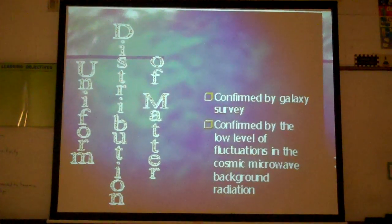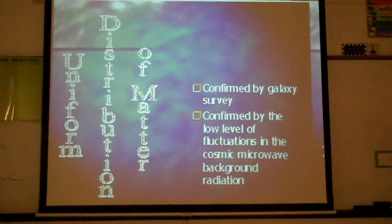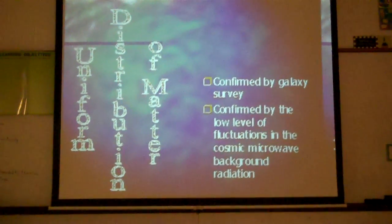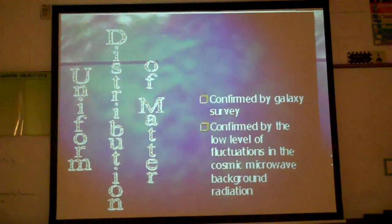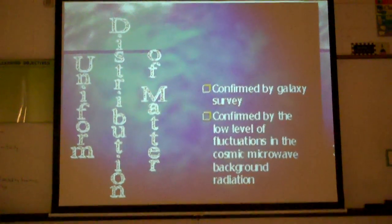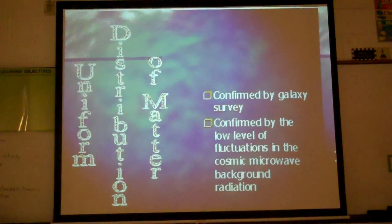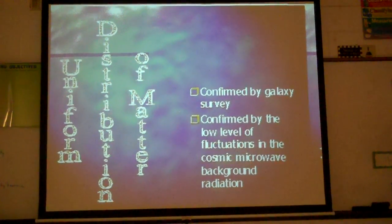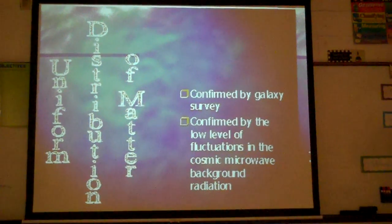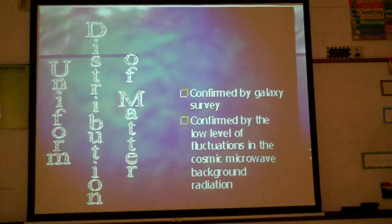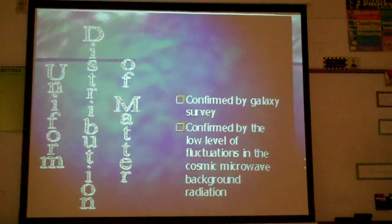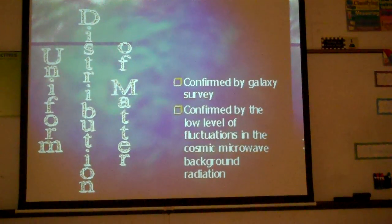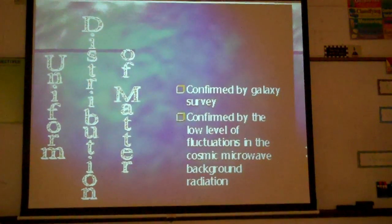The uniform distribution of matter means that all of the matter in the universe is the same throughout — it has been distributed evenly throughout the universe. It is confirmed by the galaxy survey and also by low levels of fluctuations in the cosmic microwave background radiation. Another word for fluctuations is changes, so there have been low-level changes in the background radiation that scientists have been able to observe.